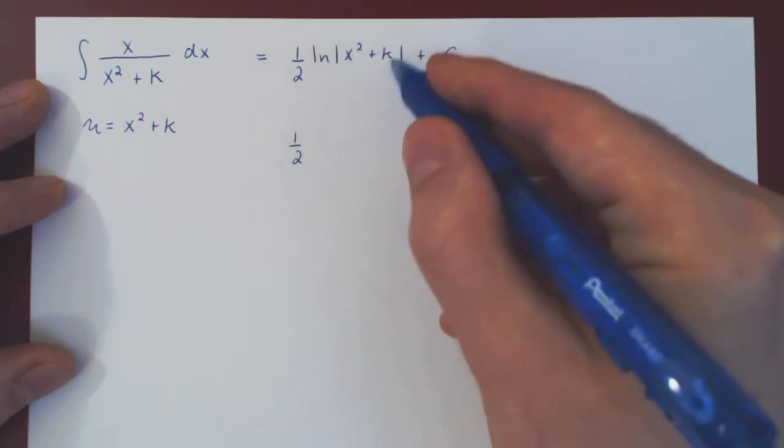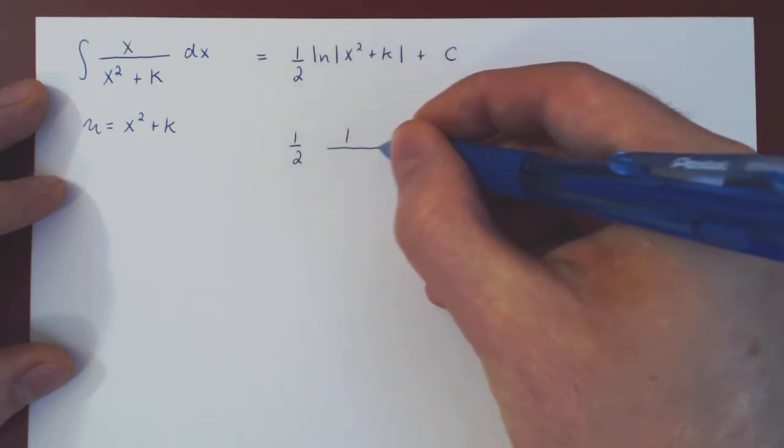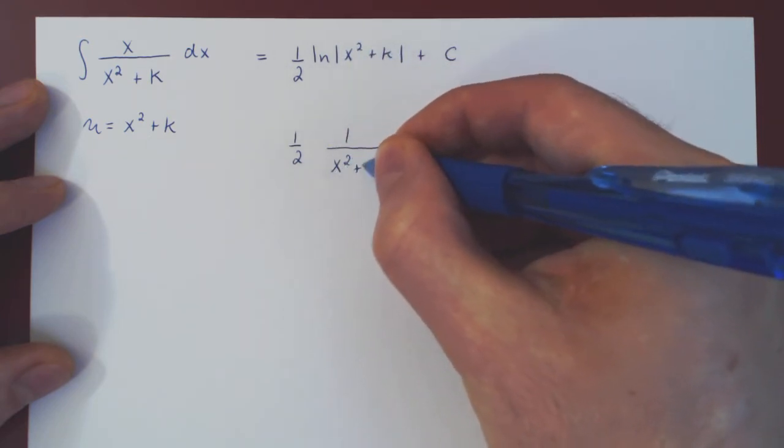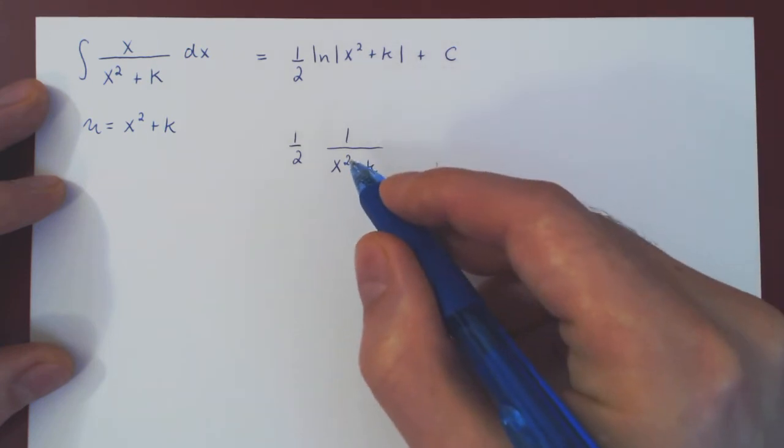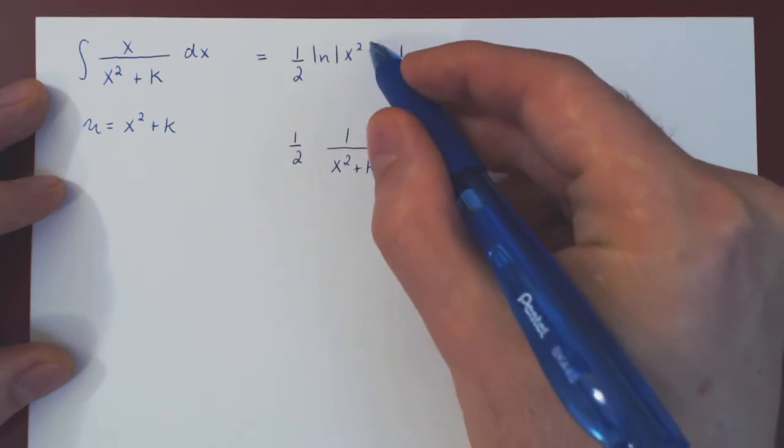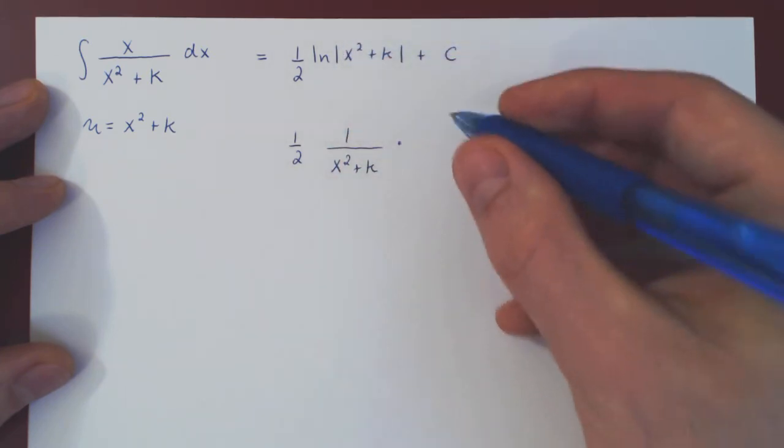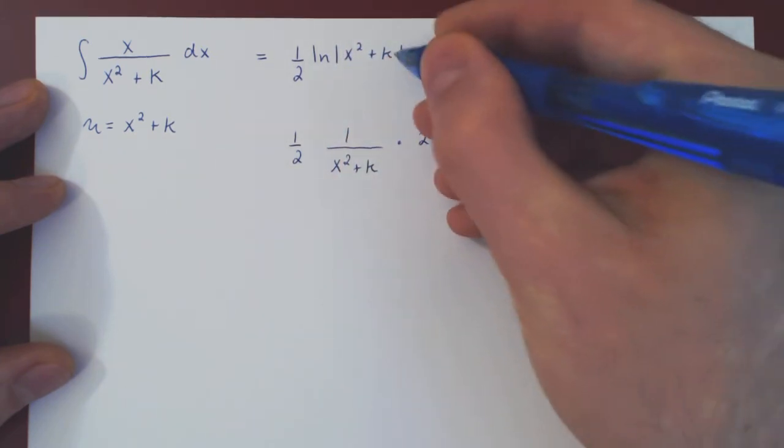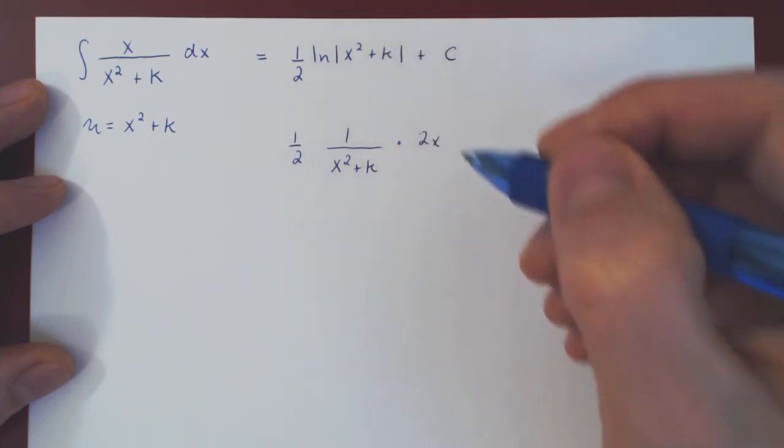the derivative of ln is 1 over the argument, so 1 over x squared plus k. But that's just the derivative of ln by the chain rule times the derivative of the argument, which is of course 2x.